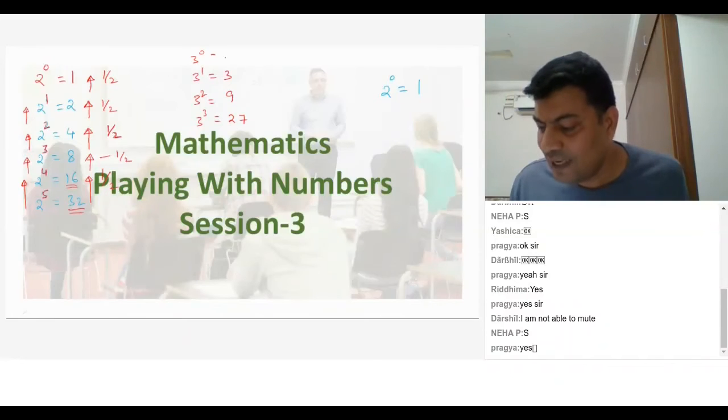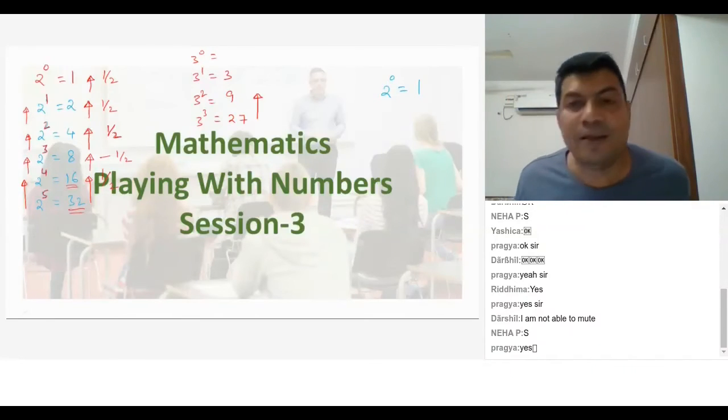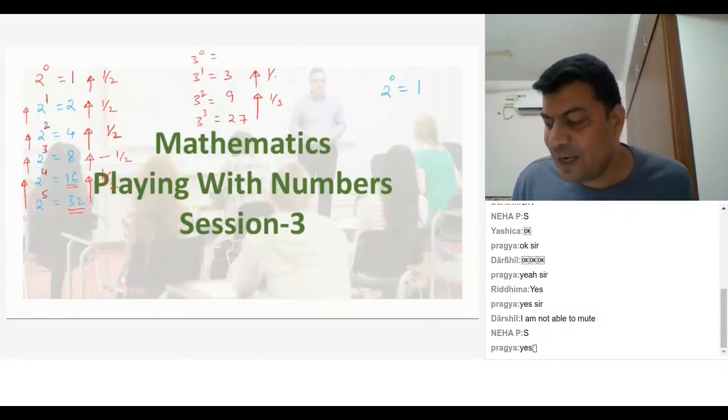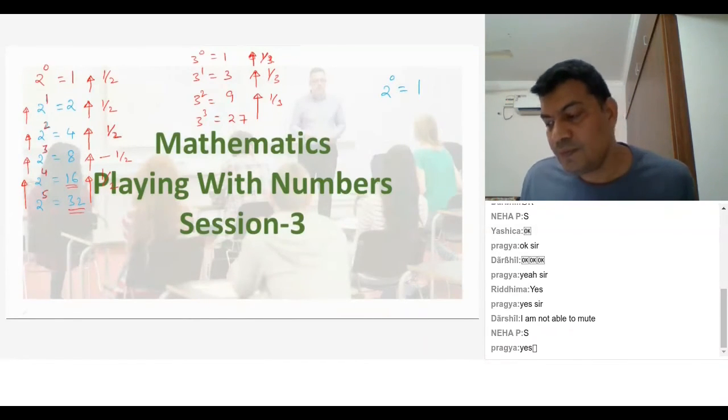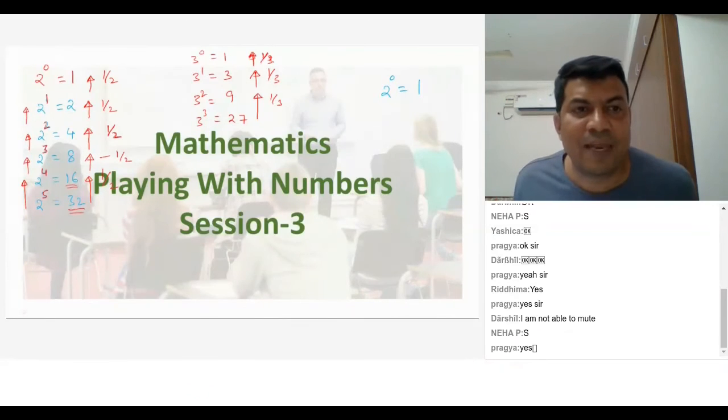Now let's see, from 27 to 9, what is happening? It is getting divided by 3. From here to here, if I am going from 9 to 3, can I say it is getting divided by 3? Yes, sir. Once again, now from here to here, if I am going up, it should be divided by 3 once again. Therefore, 3 divided by 3, answer should be 1.